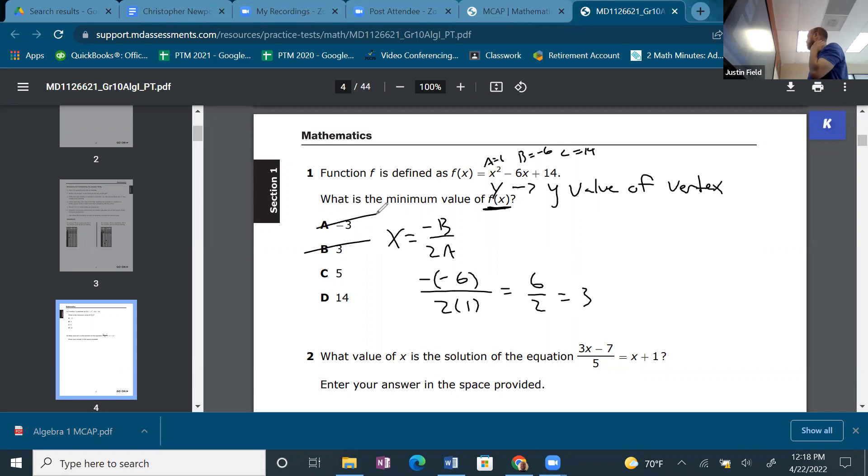Don't choose 3 because we got to substitute it in. You see? So 3² - 6(3) + 14. No calculator. 9 - 18 + 14. 9 - 18 is -9 + 14.